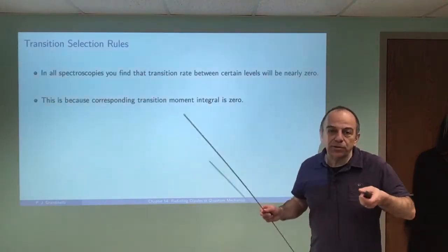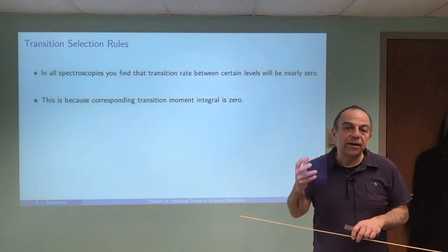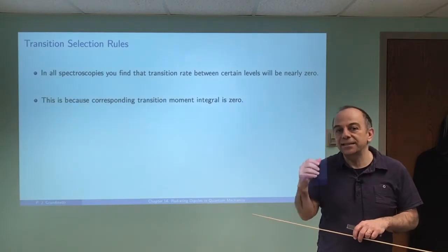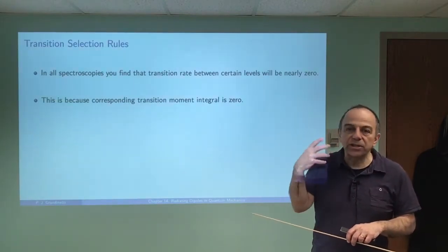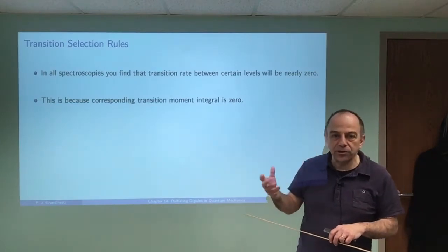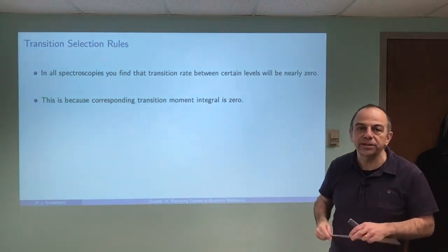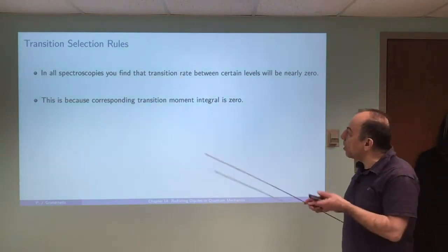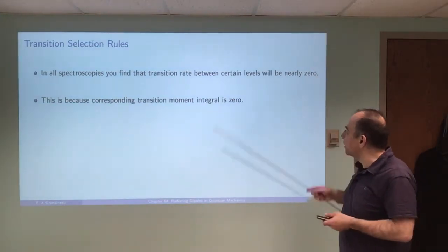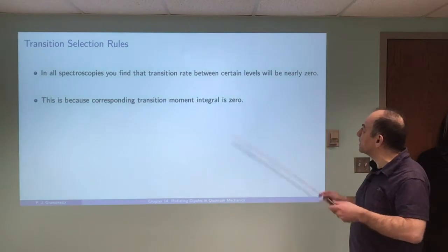In all spectroscopies, we're looking at the interaction of light and matter and how that interaction of light will involve transitions between different quantized energy levels. Those would be associated with either translational motion, rotational motion, vibrational motion, or electronic motion — electrons moving in different orbits in an atom or a molecule. In all of those cases, there will be certain transitions where the transition rate will be close to or actually zero.